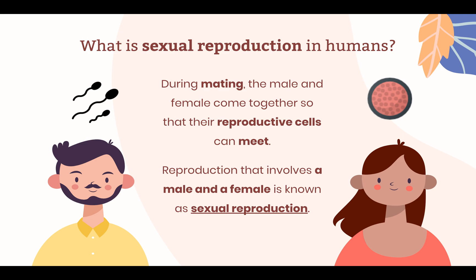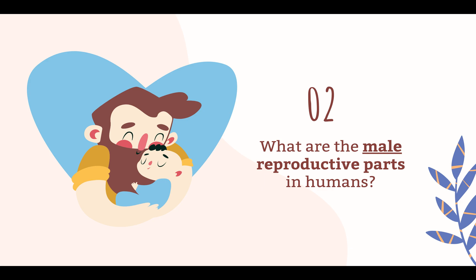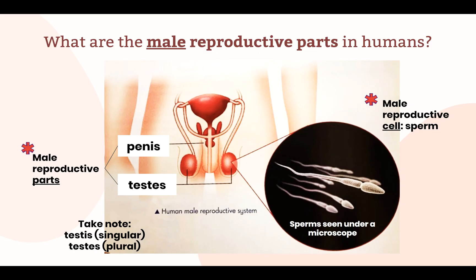Now let's find out more about the male reproductive parts. The male reproductive parts of the human body are the testis and penis. Take note that the plural form is spelled T-E-S-T-E-S, as shown in the label in the diagram, because the label points to two testes.